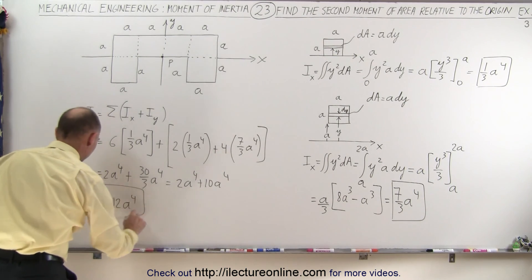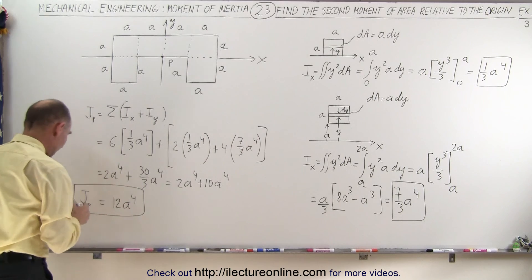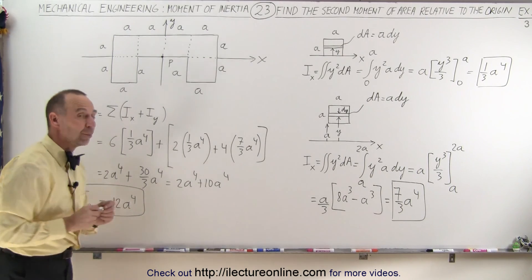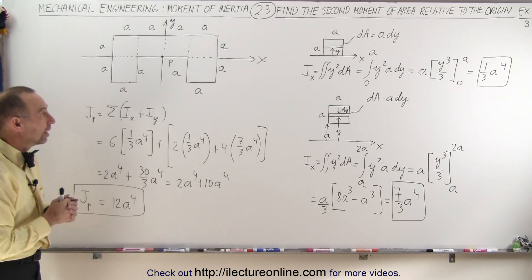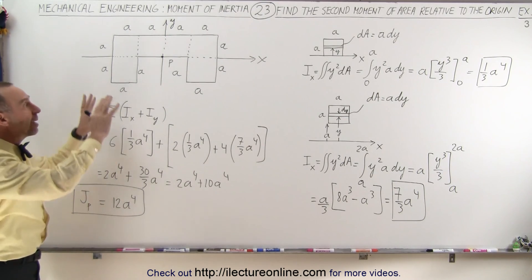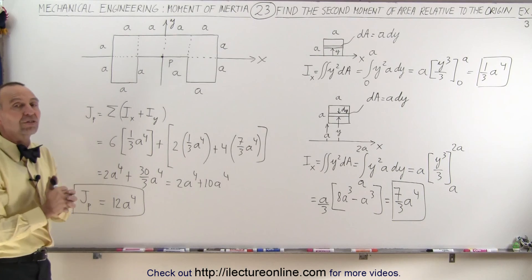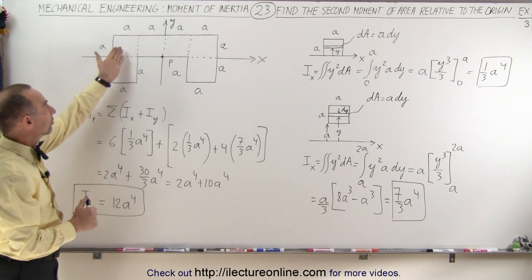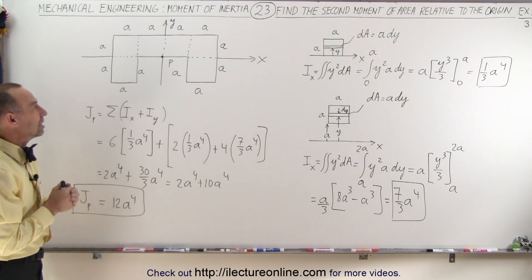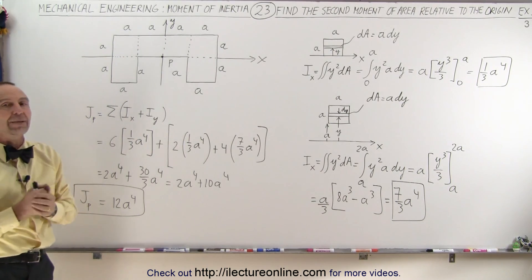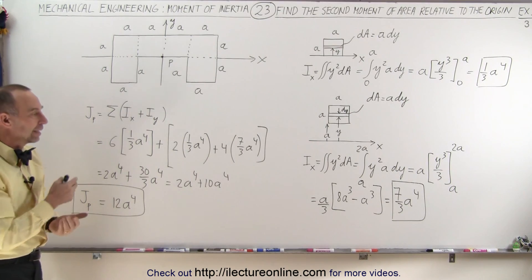That's how you find the second moment of area of a composite section — in this case, six equivalent square sections each of area A by A.